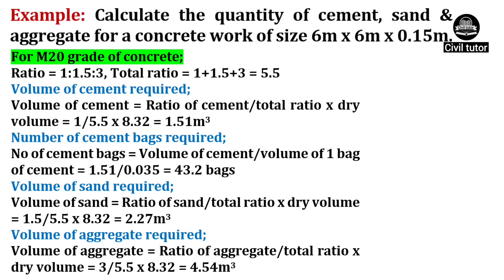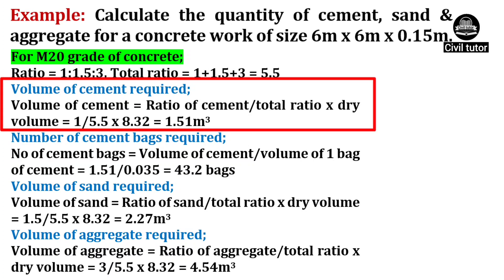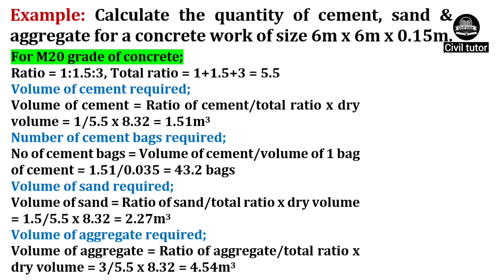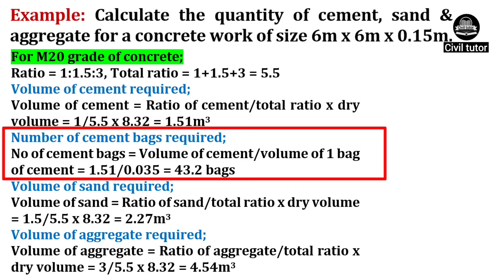We need to calculate the volume of cement required, which is given by ratio of cement upon total ratio, multiplied by dry volume. Ratio of cement is 1, total ratio is 5.5 and dry volume is 8.32. So on substituting these values, volume of cement will be equal to 1.51m³. The number of cement bags will be equal to 1.51 ÷ 0.035, giving a total of 43.2 bags.